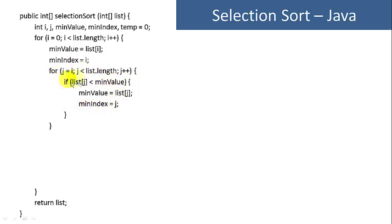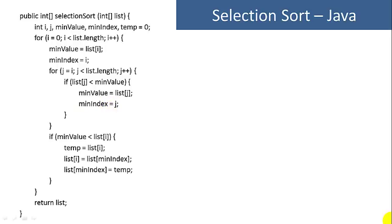Inside the inner for loop, each time through we want to do a comparison: if the list item is less than the minimum, then change the minimum value to that list item and set the index. After each iteration of the outer loop, we check if the minimum value was the first value or not. If it's the first value, we don't need to do a swap. If it's not the first unsorted value, then we swap the min value with the first unsorted value. That concludes our video on selection sort. I'm Joe James — thank you for watching.